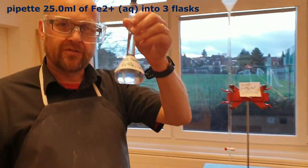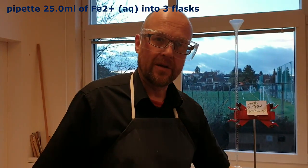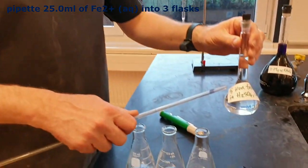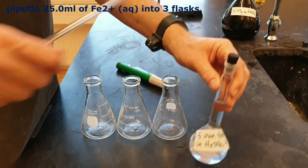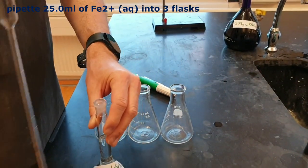We've got five iron tablets dissolved in 100 millilitres of one mole per decimetres cubed sulfuric acid. Now I'm going to pipette 25 mils into each of these three Erlenmeyer flasks. What's the plural of flasks? Flasky? I don't know. Okay, here we go.